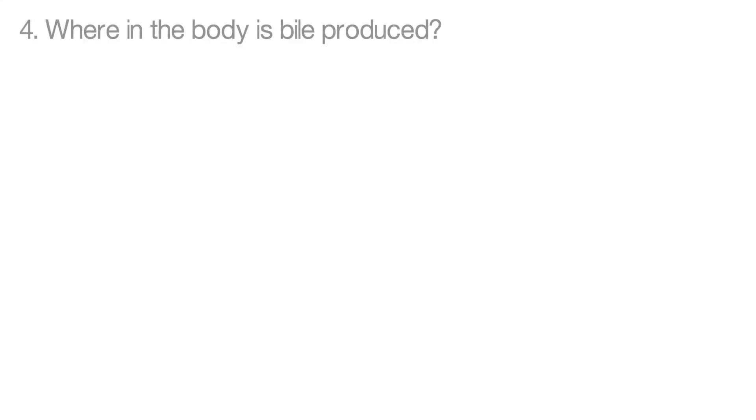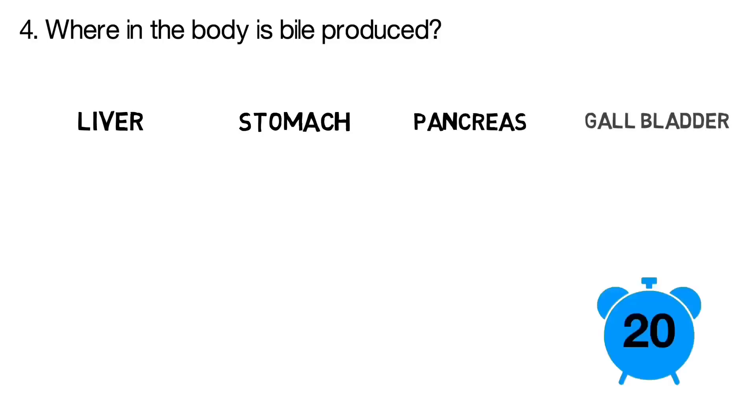Question number four. Where in the body is bile produced? Is it in the liver? In the stomach? In the pancreas? Or in the gallbladder?